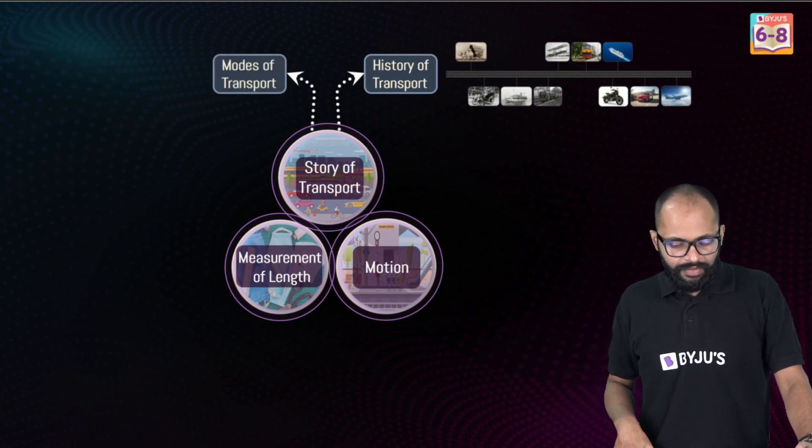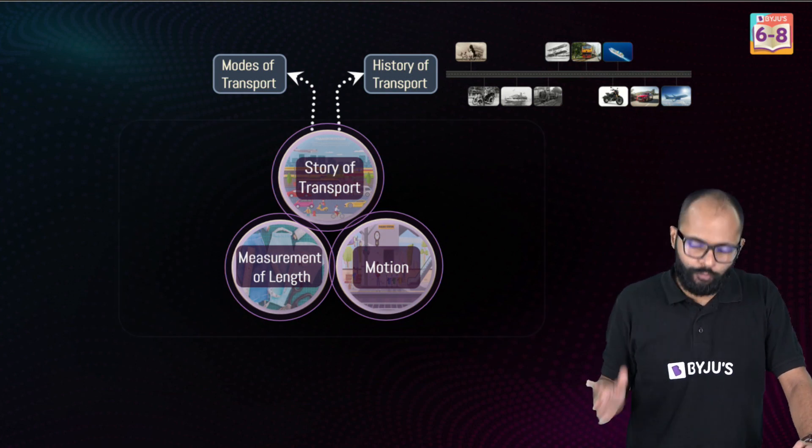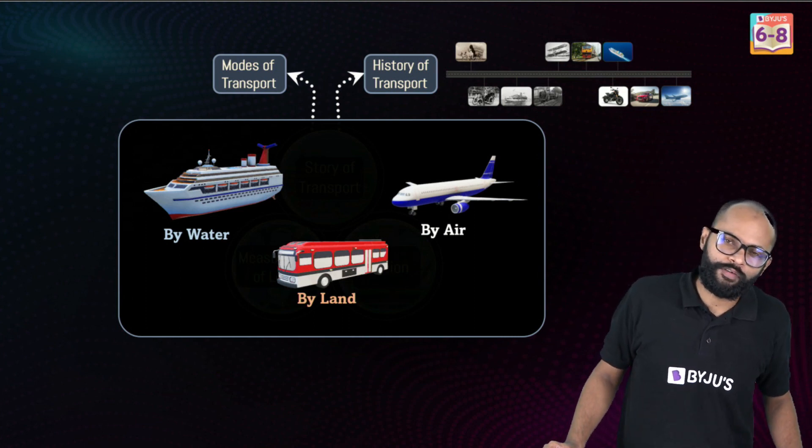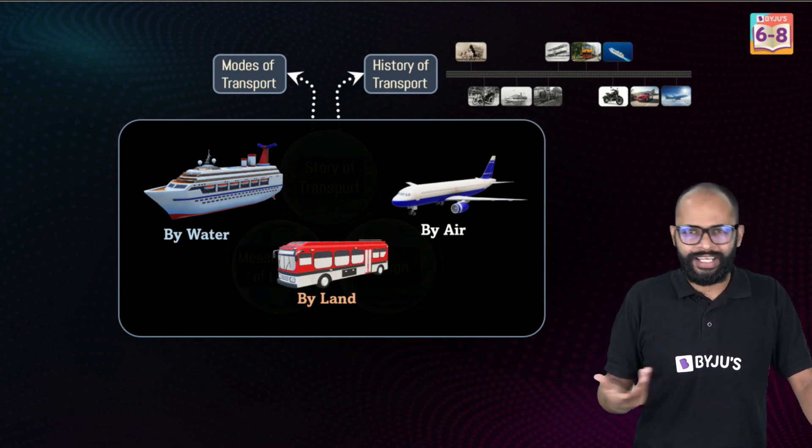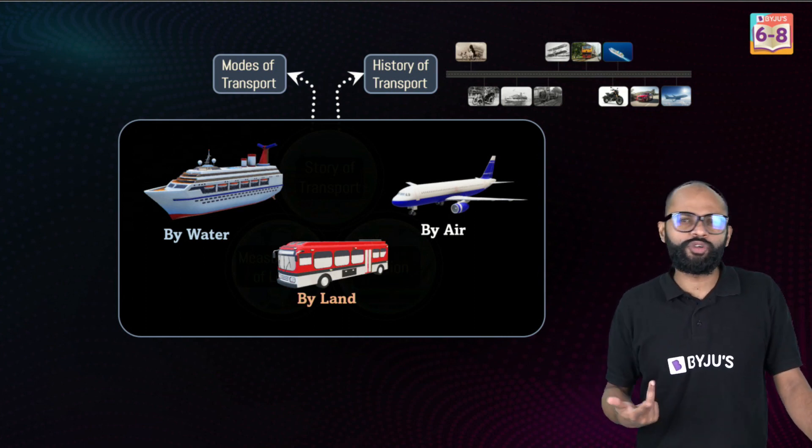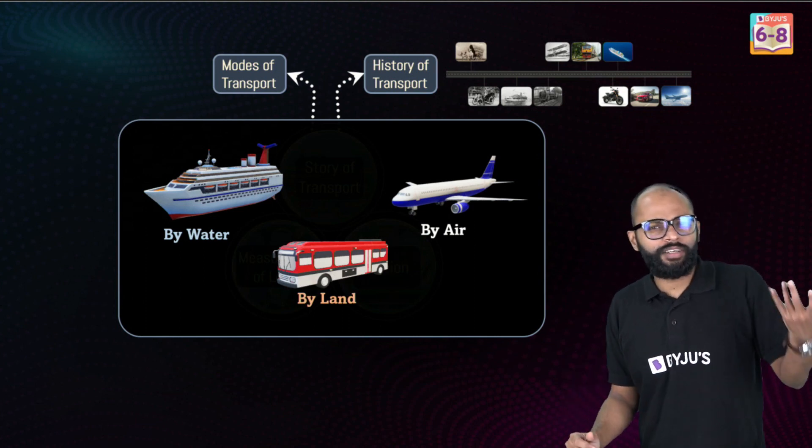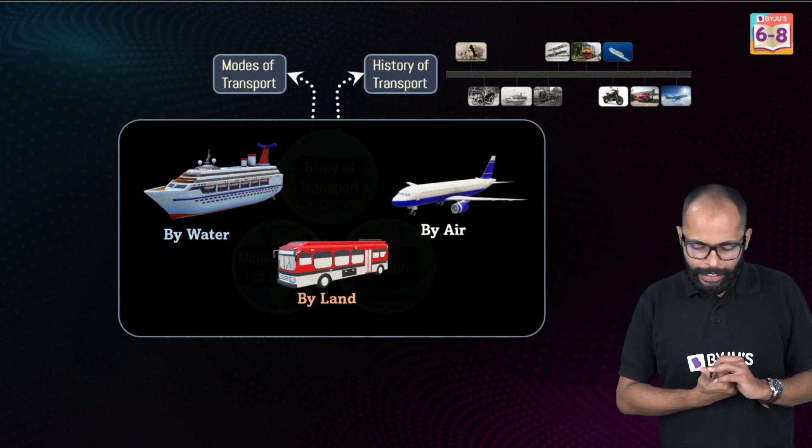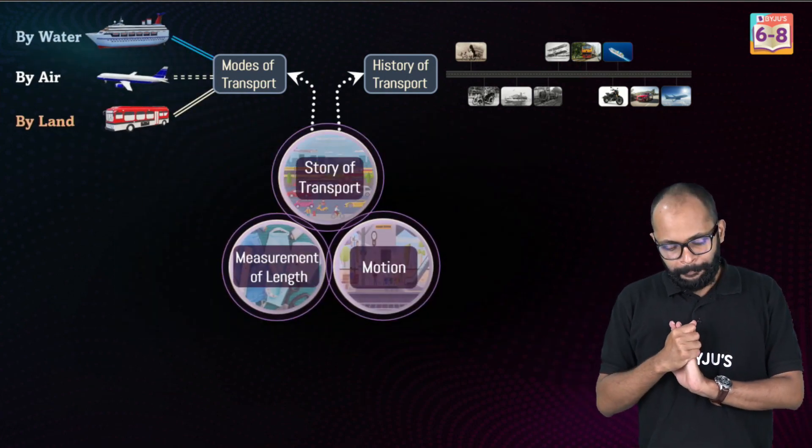Now what's next? We have another part in story of transport that is modes of transport. What kind of question comes? Name three modes of transport in water, name two modes of transport on land, name two modes of transport in air. By water we have waterways, ships, yachts, sails. By land we have railways, roadways, cars, buses, bikes. In air we have airplanes, fighter jets, helicopters, gliders. All these are modes of transport.